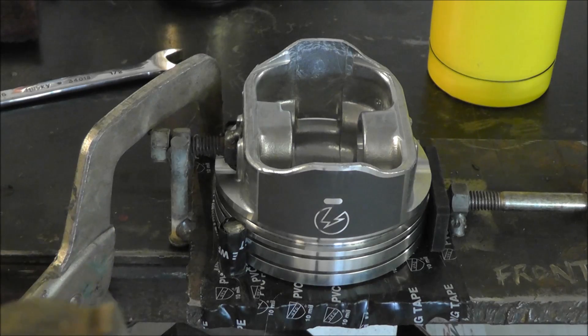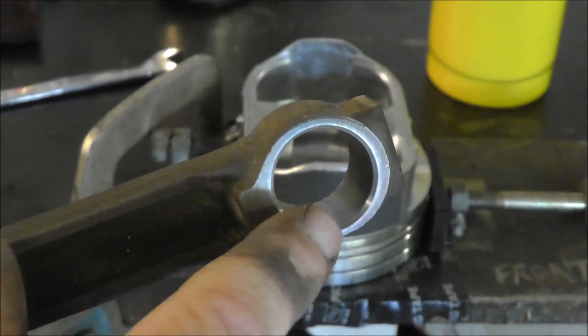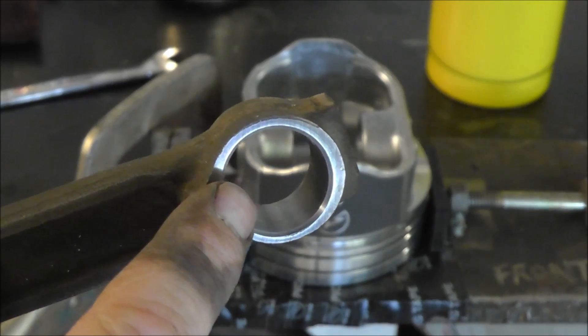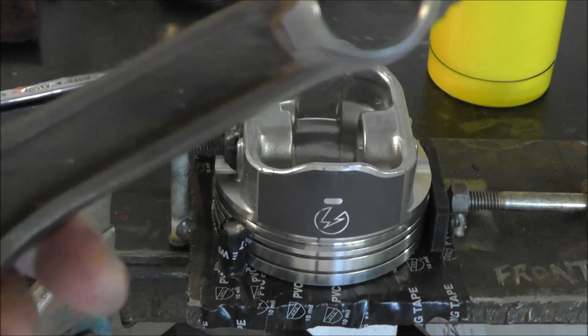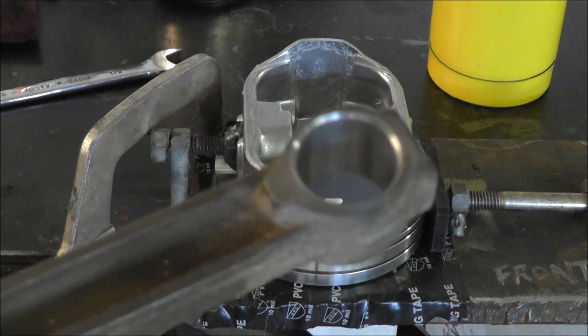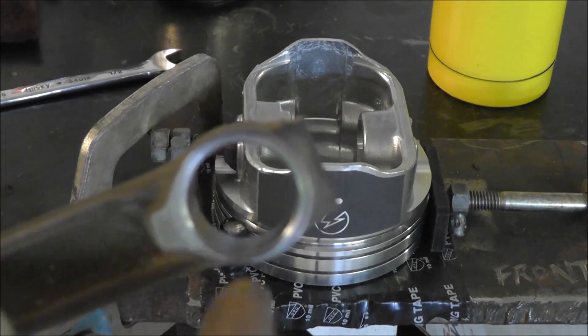This is not going to take very long. What you want to do is heat this small end up until it goes blue. You don't want to get it any hotter than that. You don't want to get it red hot. If you get this thing red hot, you might as well throw it away. You just want to get it to where it changes to blue and then put the wrist pin in.